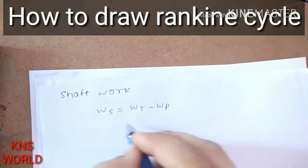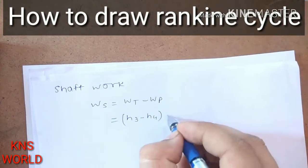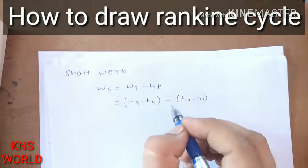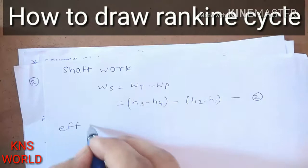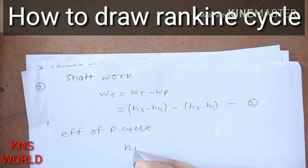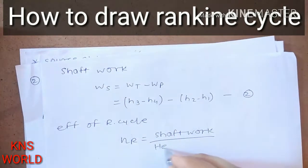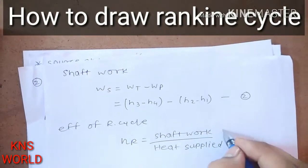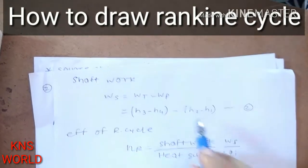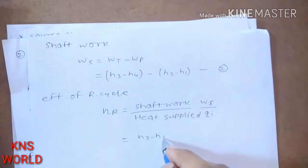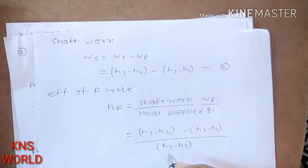Shaft work WS equals (H3 minus H4) minus (H2 minus H1). The efficiency of the Rankine cycle is shaft work divided by heat supplied: η = WS / Qi = [(H3 minus H4) minus (H2 minus H1)] divided by (H3 minus H2).